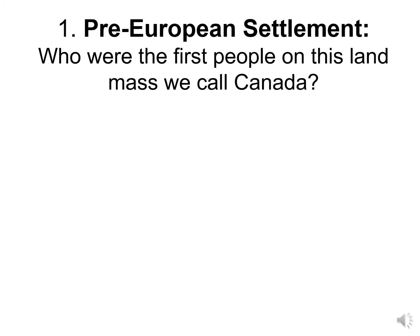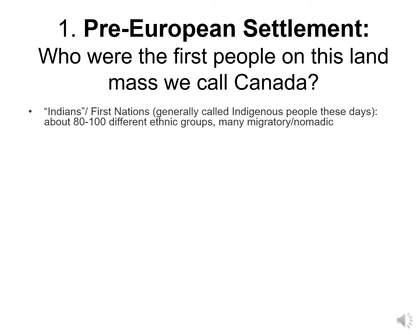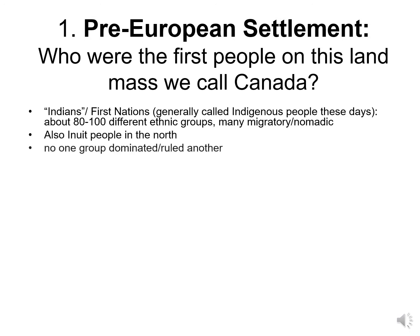Before Europeans came here, who were the people on this landmass we now call Canada? They were the native people — Indians, First Nations, generally we say Indigenous these days. There were about 80 to 100 different ethnic groups. Many of them were migratory, meaning basically nomadic. There were also the Inuit people in the Arctic. These groups had battles, alliances, occasional conflict, and lots of trade, but no one group dominated or ruled over another.